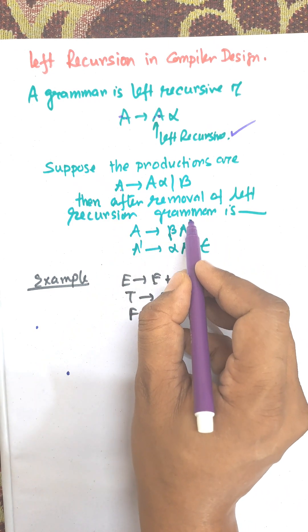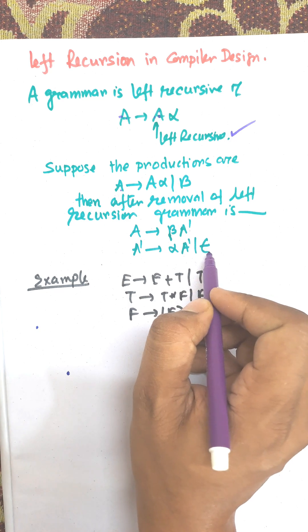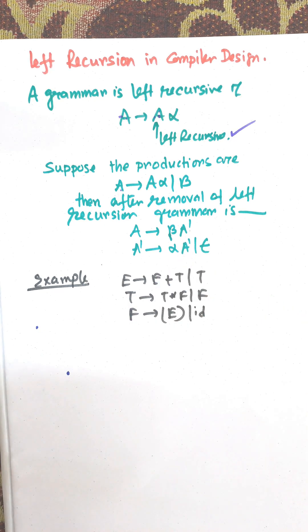So A → βA', A' is the next variable, and from A' → αA' | ε. So we need to find alpha and beta.